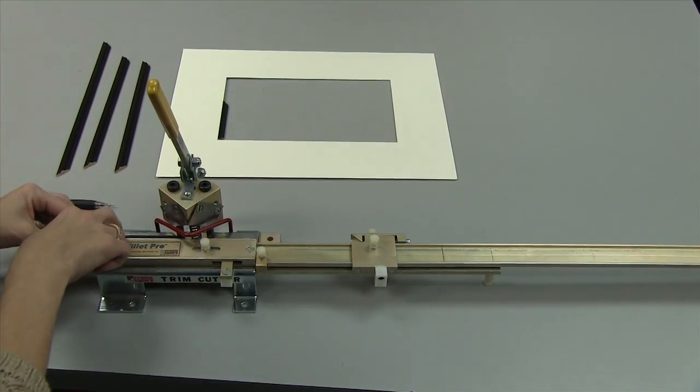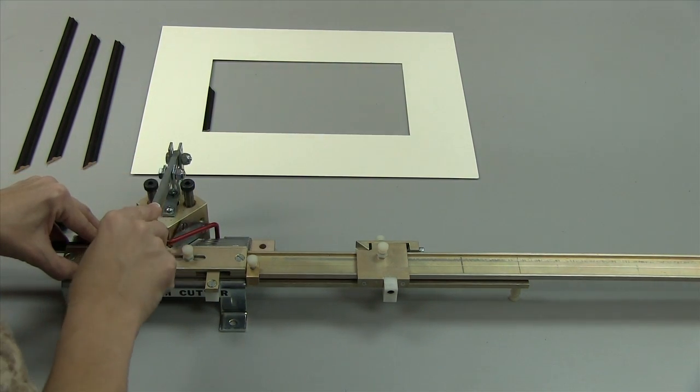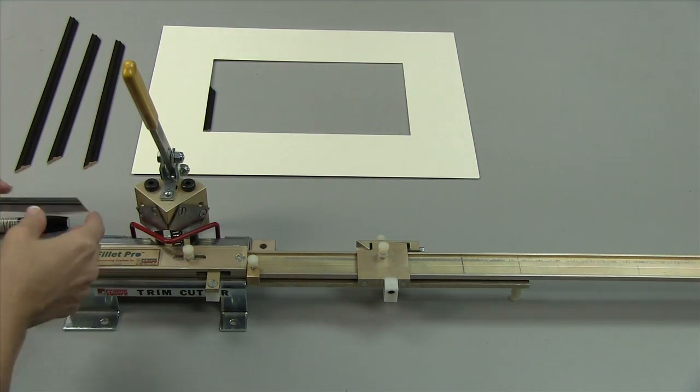Position the fillet against the fence and make the first cut. Hold the fillet securely as you pull the handle and blades downward.